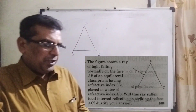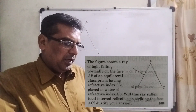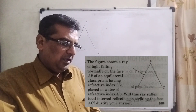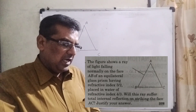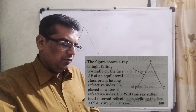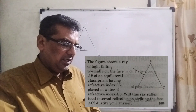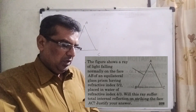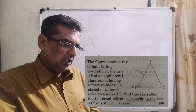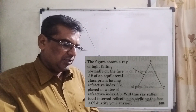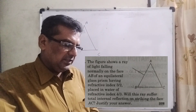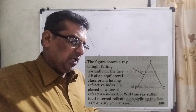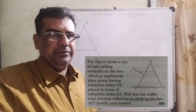Next question: The figure shows a ray of light falling normally on face AB of an equilateral glass prism having refractive index 3/2, placed in water of refractive index 4/3. Will this ray suffer Total Internal Reflection on striking face AC? Justify your answer. This question was asked in CBSE 2018.